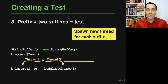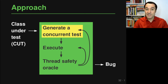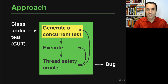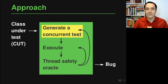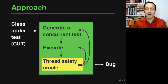Zooming out, here's the overview of the approach again. You've now seen how to generate concurrent tests. These tests are then executed. In practice, ContiG repeatedly executes the test on the standard Java virtual machine, but you could use more sophisticated techniques such as the one we'll see in the fourth video of this lecture. Now let's look at the thread safety oracle, which figures out whether a given execution of the generated concurrent test is exposing a thread safety bug or not.